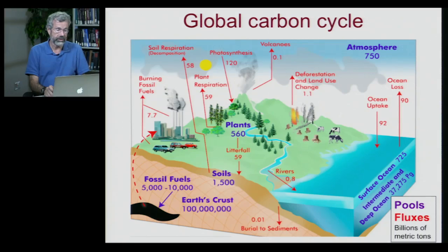Next, let's look at the global carbon cycle. Carbon is essential for life, not only in DNA and protein, but also in the carbohydrates we eat. Carbon also cycles between the atmosphere, the oceans, and the soils.